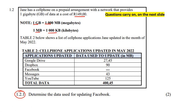And the data used to update — so you've got YouTube, Messages, Facebook, Dropbox, Google Drive — all of these things that she updated. It says: determine the data that was used to update Facebook. You see how they've given us the values to update all of these different apps.